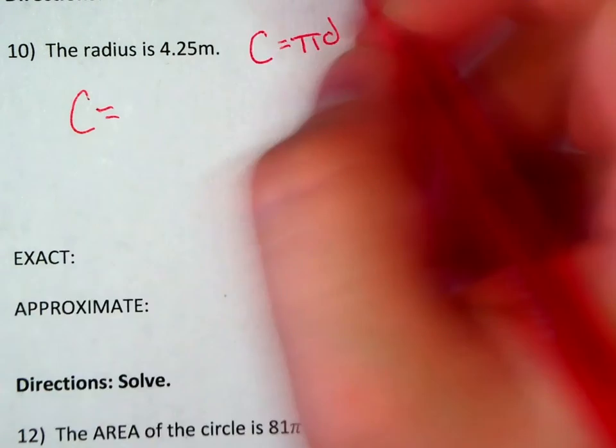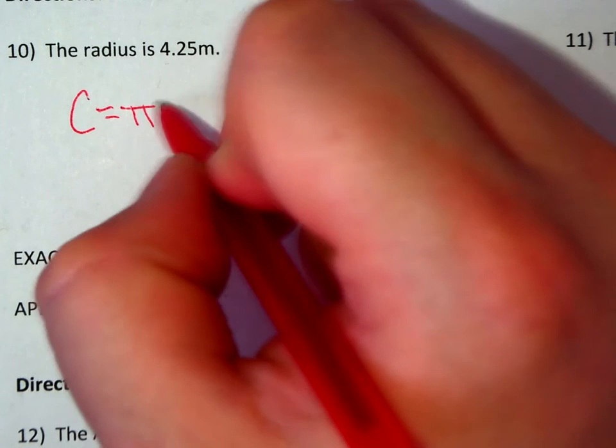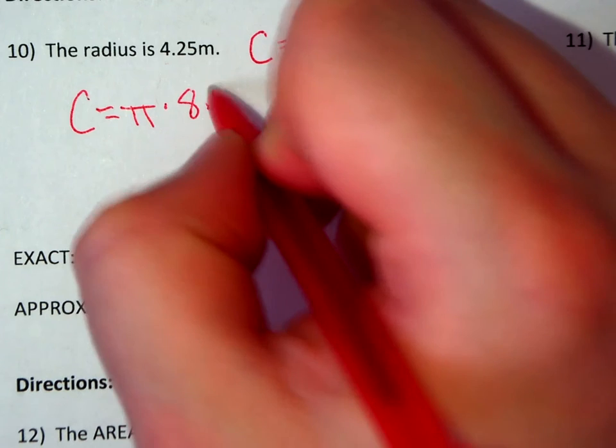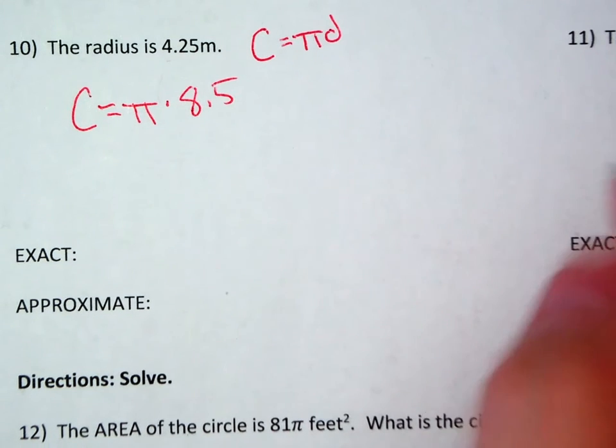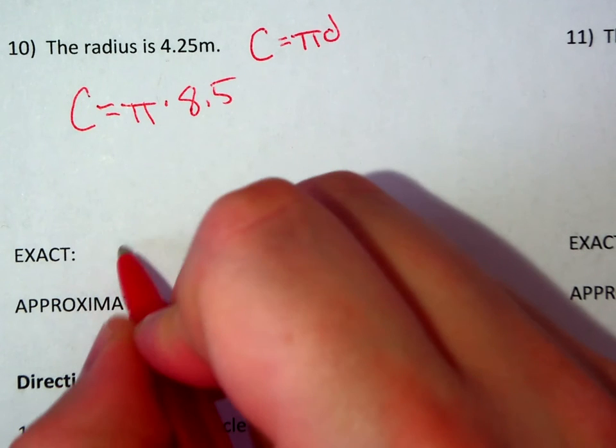So now I have C equals pi times 8.5. I can't really simplify that anymore. I can just put it in my preferred order. That's my exact answer.